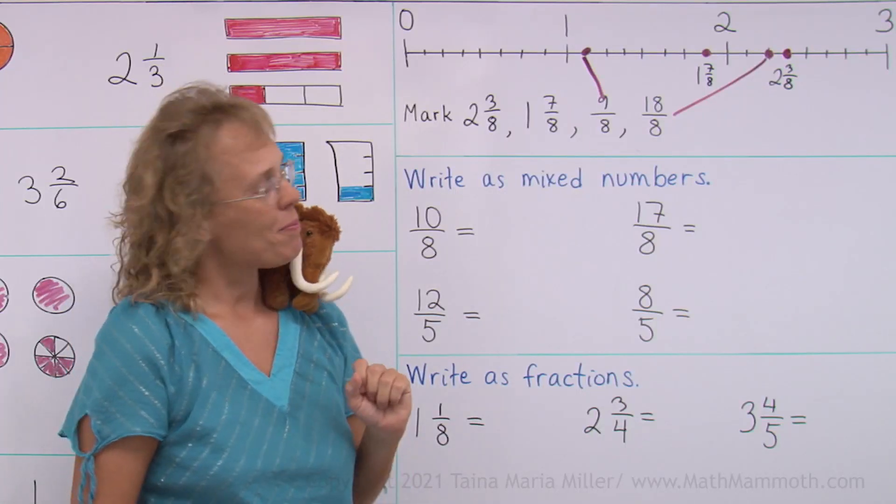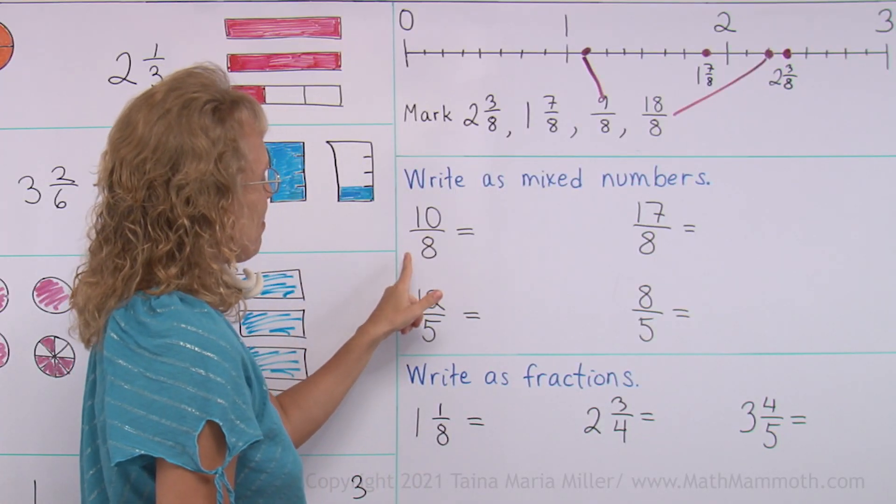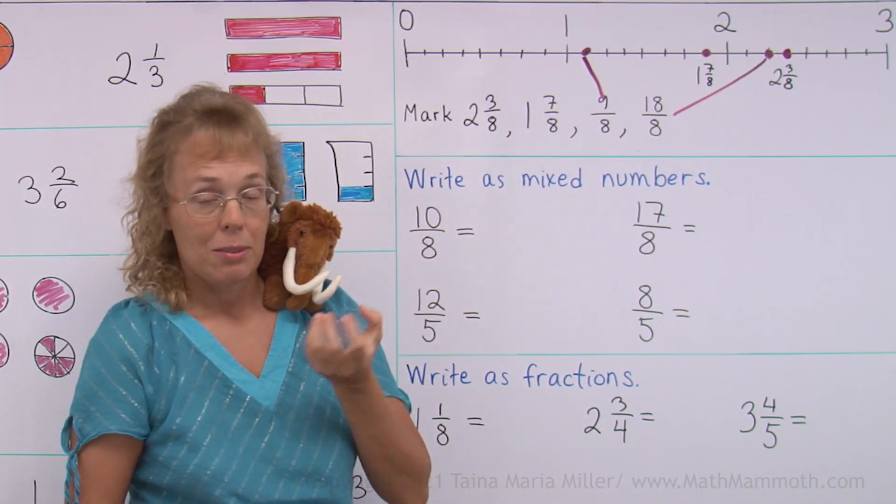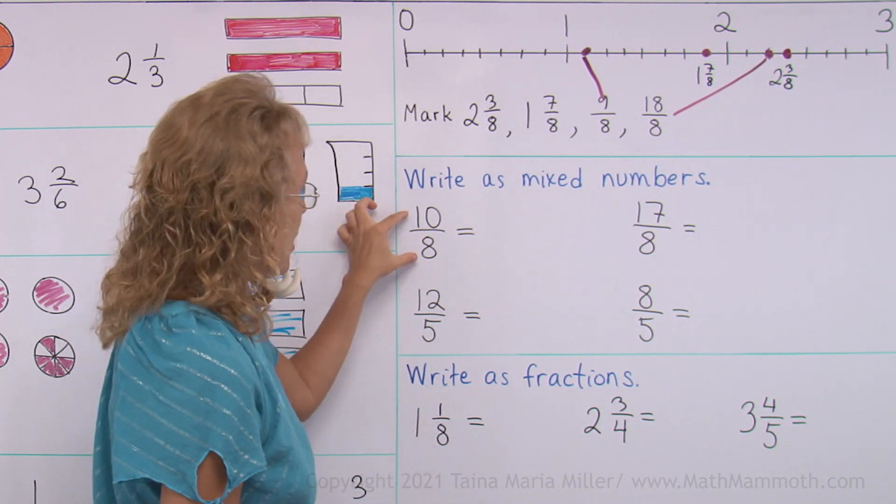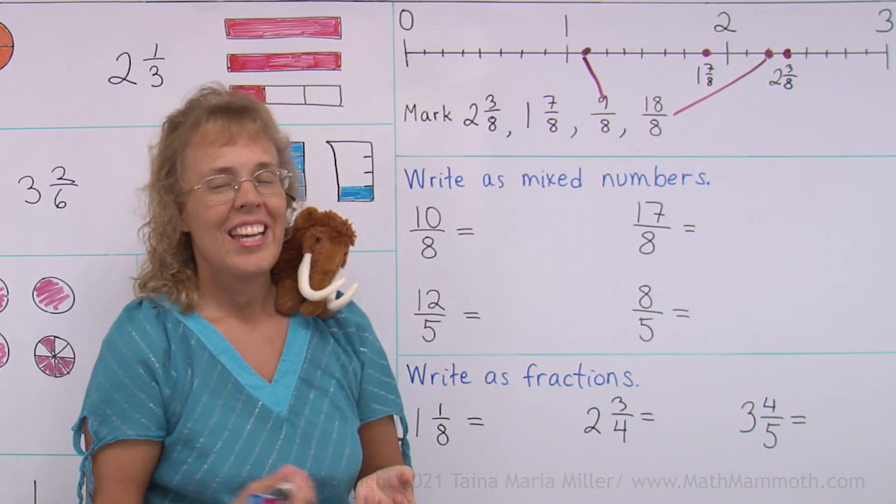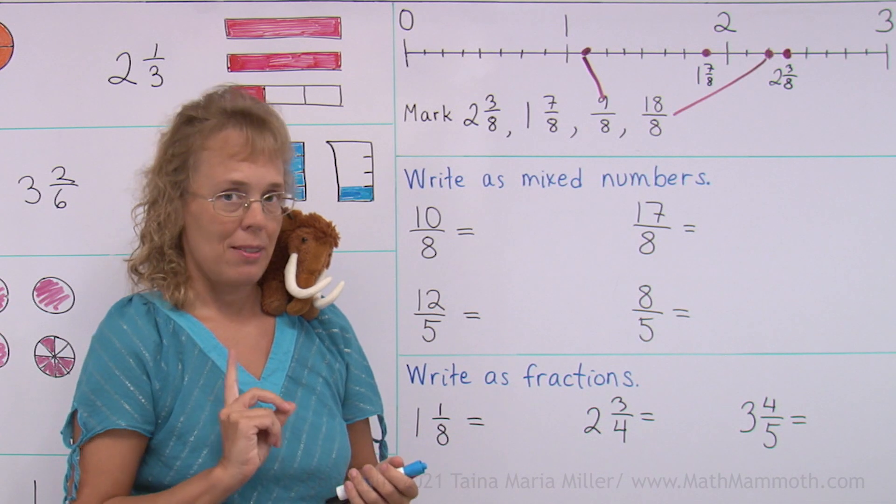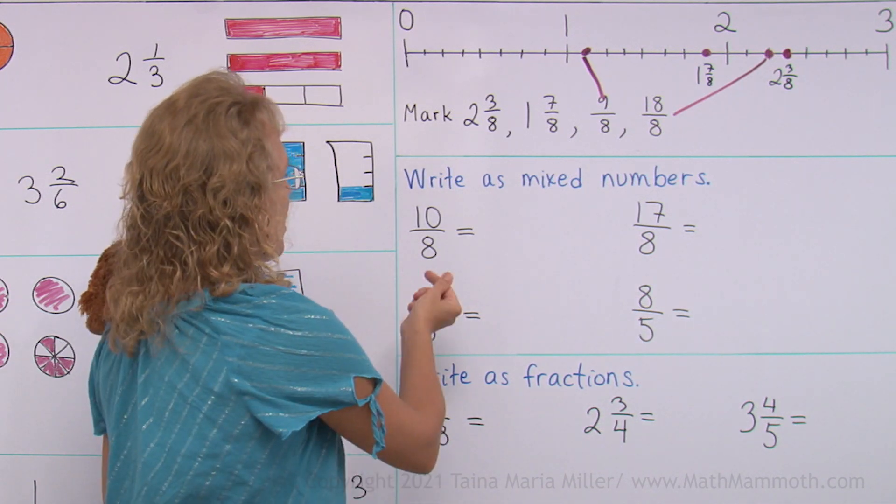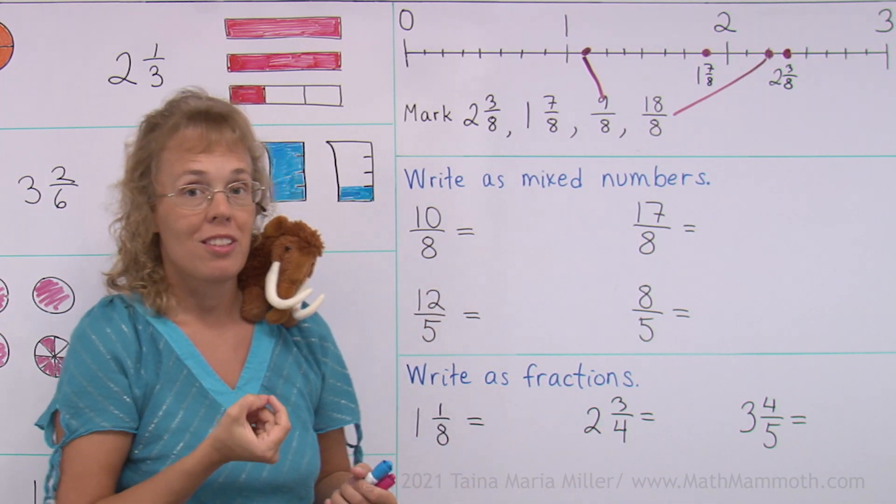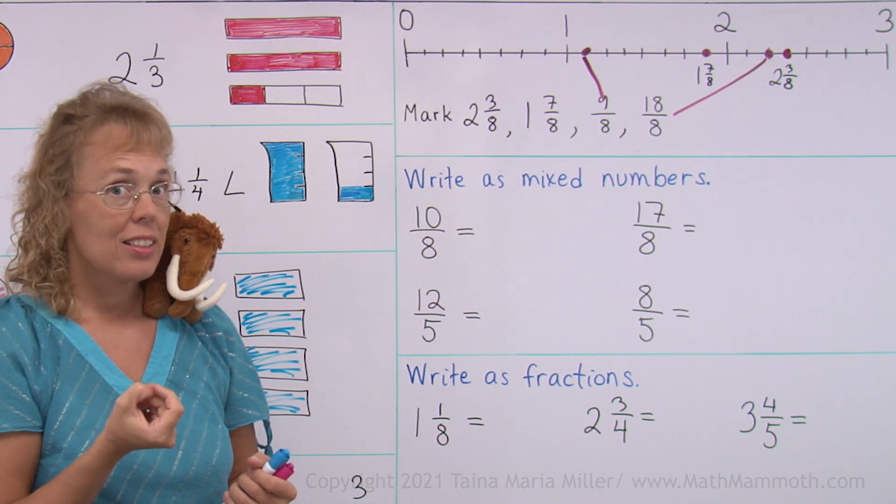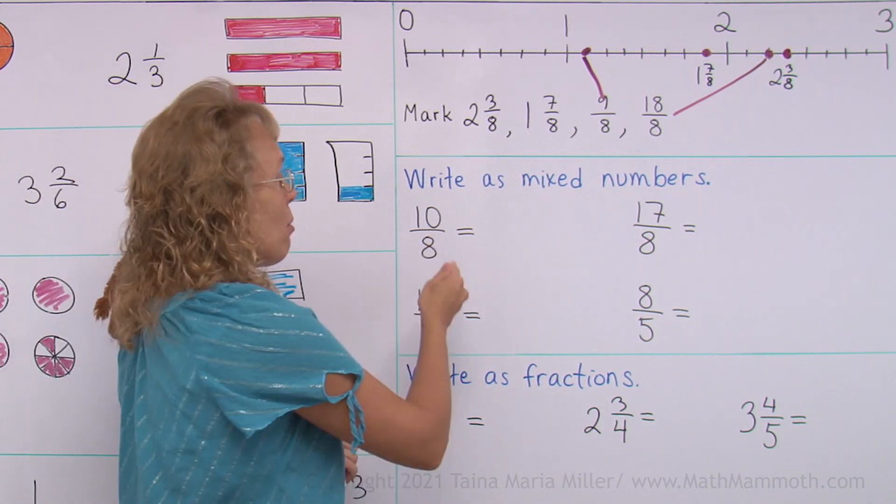Write as mixed numbers. This is a fraction. We need to write it as a mixed number because this is more than one whole. 8 eighths would make 1, and this is 2 eighths more than 8 eighths. So it is actually 1 and 2 eighths.